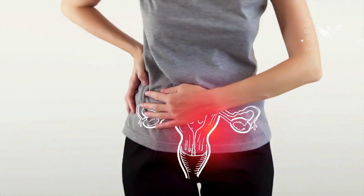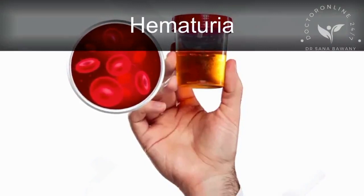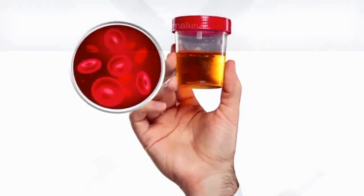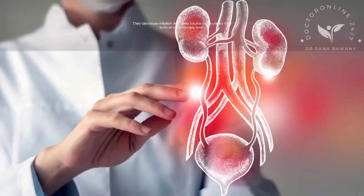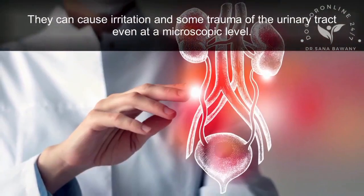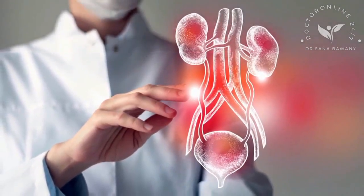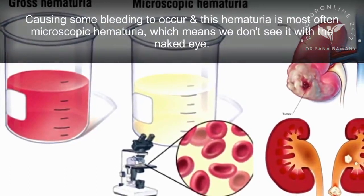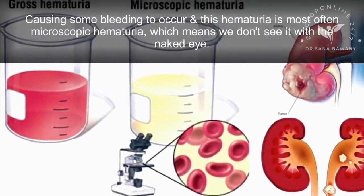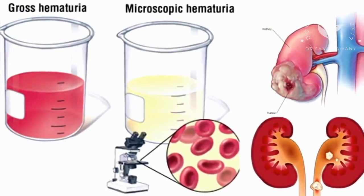Another sign of UTI is hematuria, which is blood in the urine. Bacteria in the bladder and urinary tract can cause irritation and some trauma of the urinary tract even at a microscopic level, causing some bleeding. This hematuria is most often microscopic, meaning we don't see it with the naked eye.